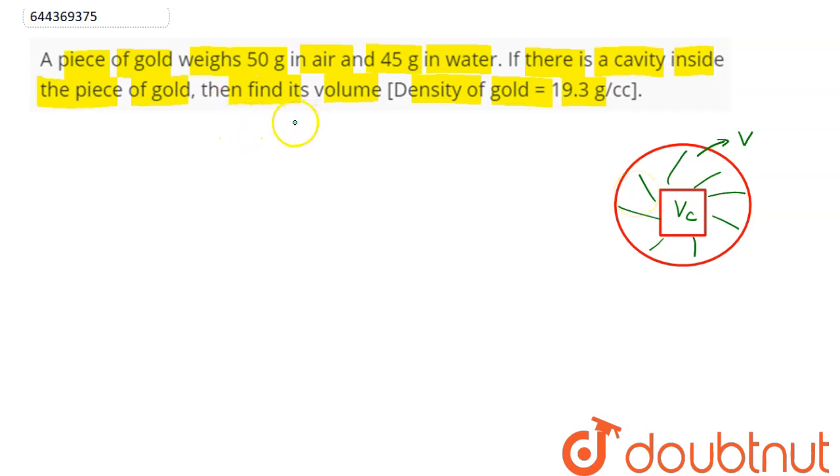The volume of gold can be found if density of gold is known and we have mass of gold. So volume of gold V equals mass of gold divided by density of gold. Mass of gold is 50 grams and density of gold is 19.3 grams per cubic centimeter, hence this comes to 2.6 cubic centimeters.